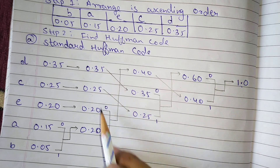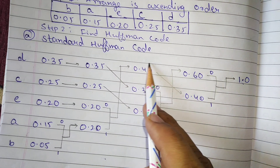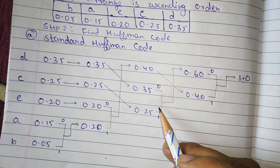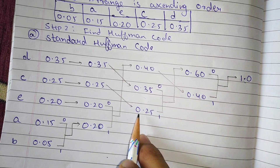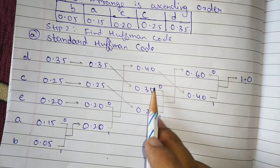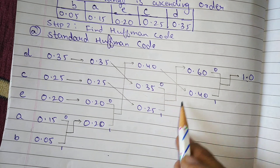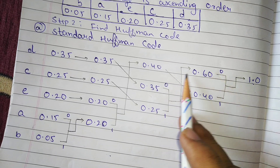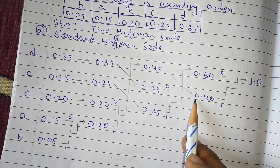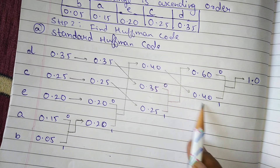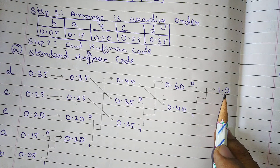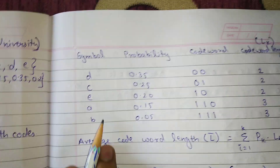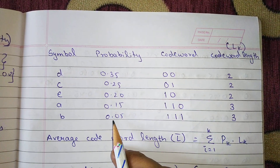Again, add the last two probabilities: 0.20 + 0.20 = 0.40. This doesn't exist, so since it is the highest value, it goes to the top, and the remaining values are copied down — 0.40, 0.35, 0.25. Next, 0.35 + 0.25 = 0.60, which is more than 0.40, so it goes to the top. Then finally the addition gives 1.